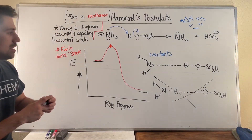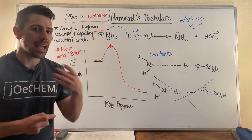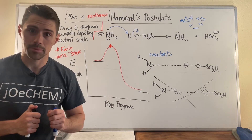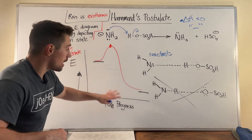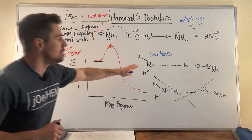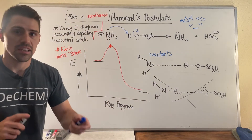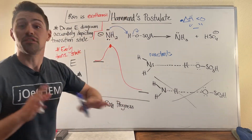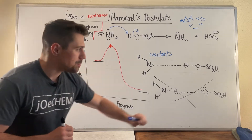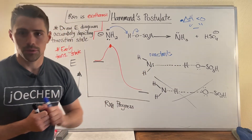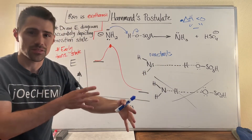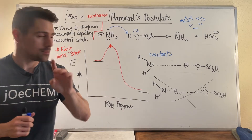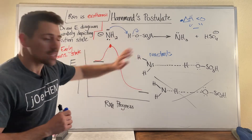That's how someone might ask you to demonstrate your knowledge of Hammond's postulate — maybe you draw an energy diagram, maybe you show them what a transition state looks like. Now I want to wrap this back to free radical halogenation because I thought it would fit well in this video.